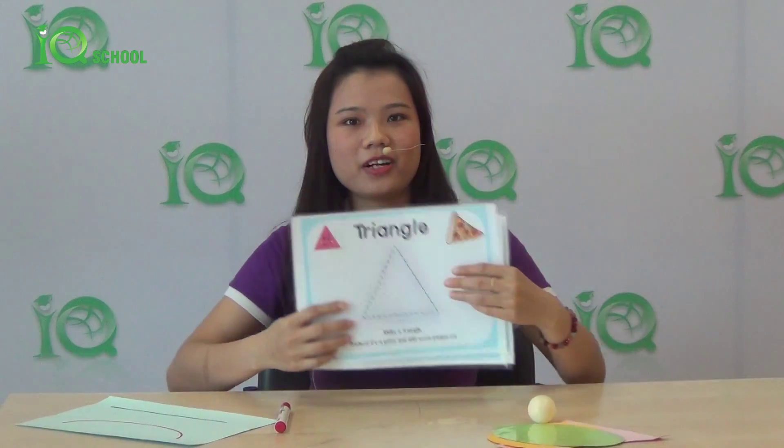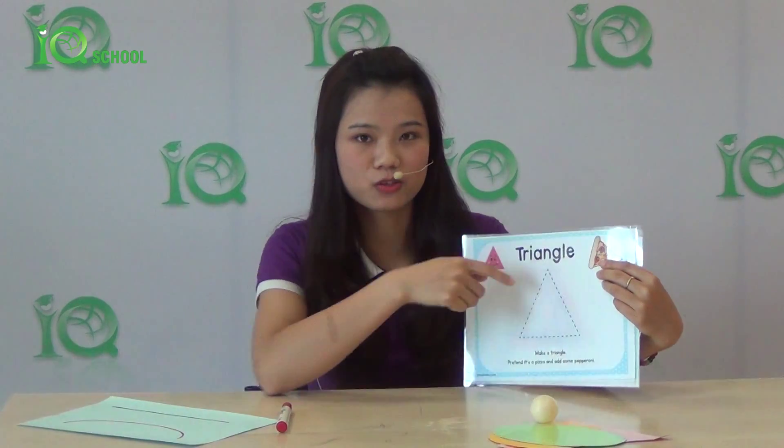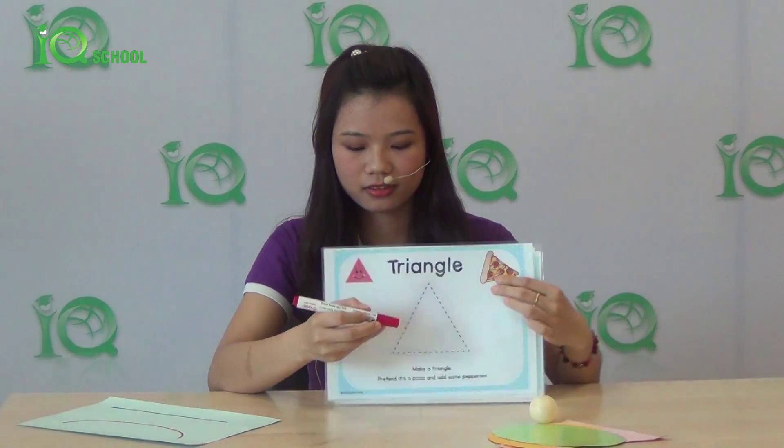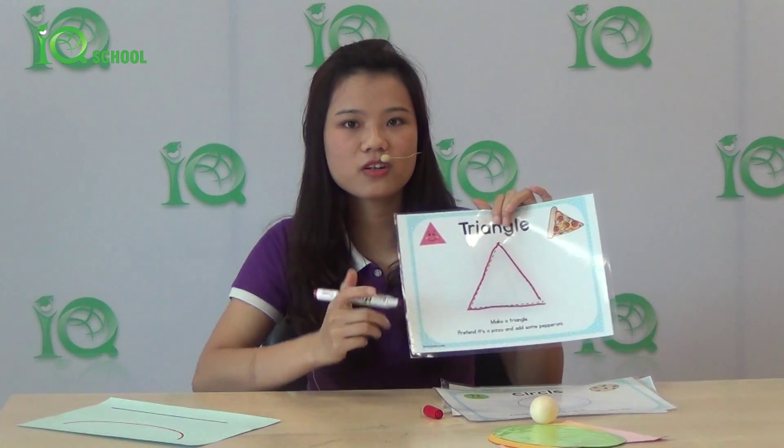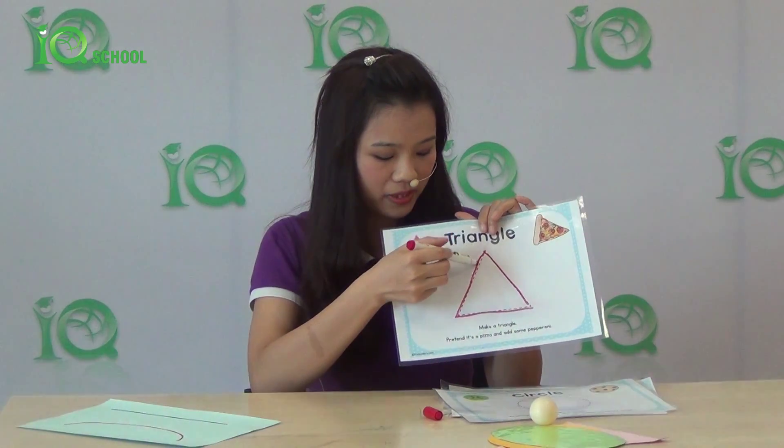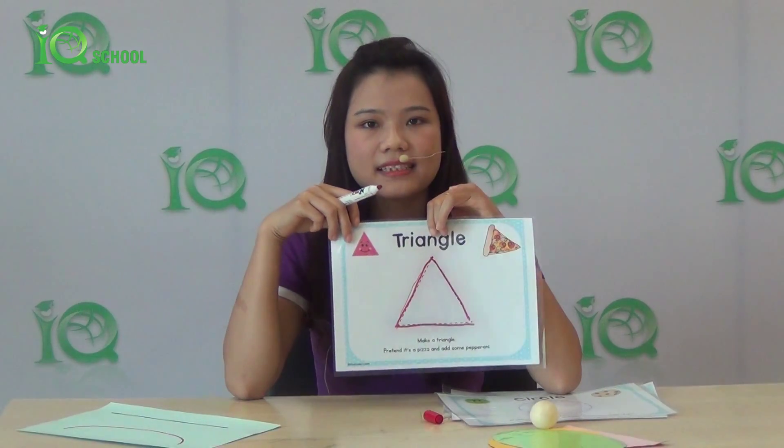So let's review. Look at the paper. I have a triangle here, so I will draw a triangle here. One, two, three — the triangle has three sides.